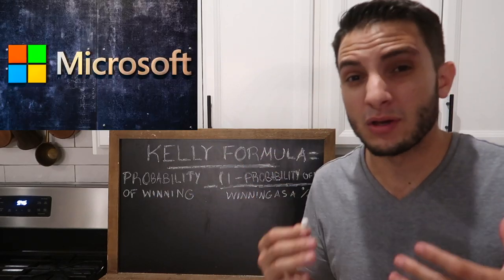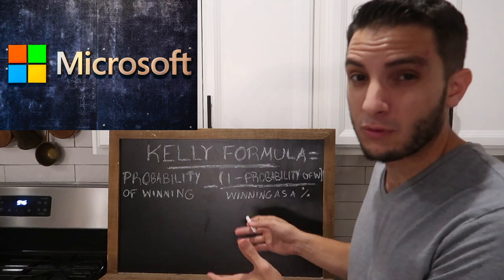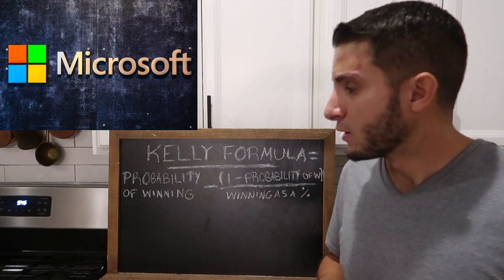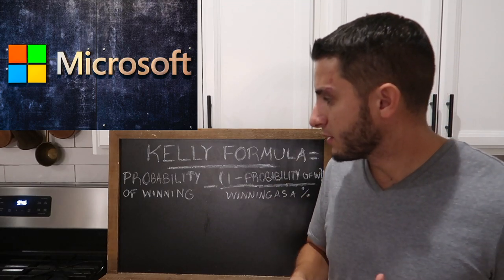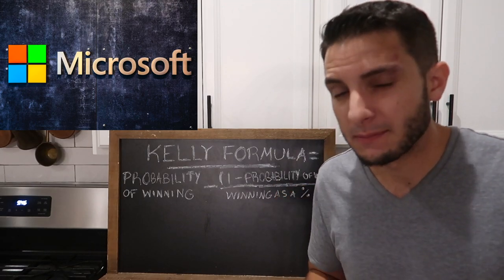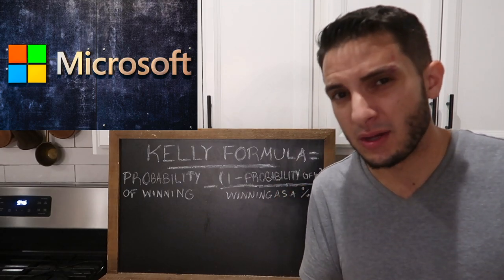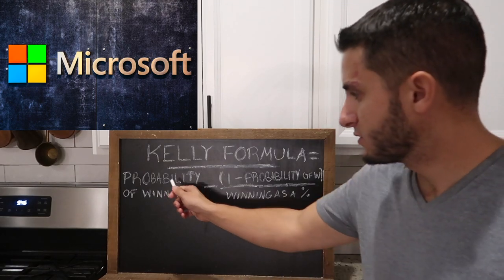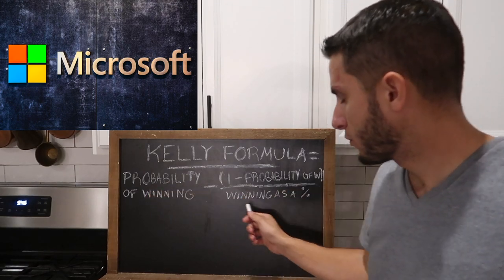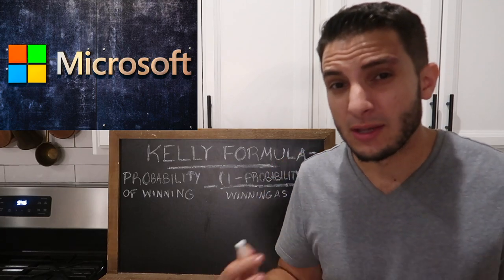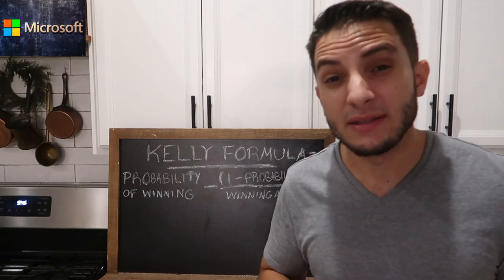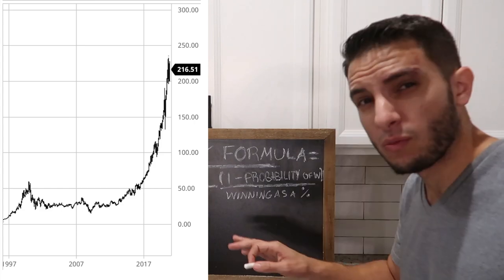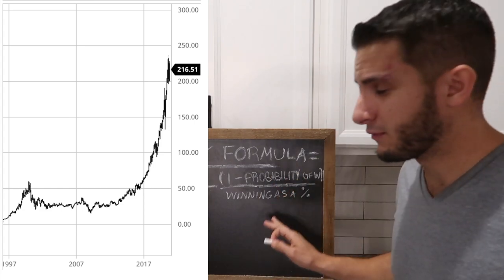We're going to plug the stock Microsoft into the Kelly Formula. There are two things we need to understand: what is the probability of Microsoft winning, and what is their winning as a percentage likely to be? These two numbers are important. I went back and looked at Microsoft over the last 22 years — it's averaged a compounding rate of return of 15%. We'll plug that number in first.